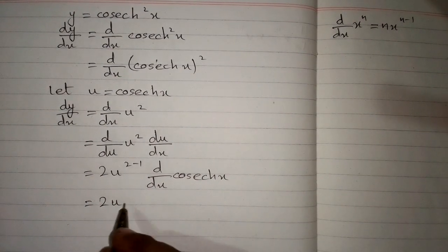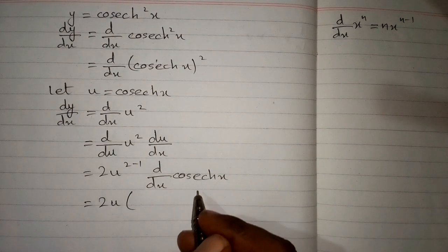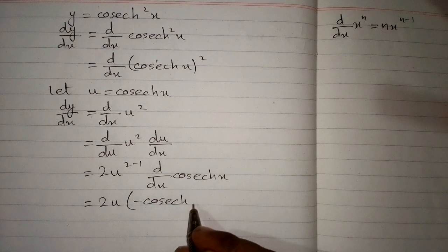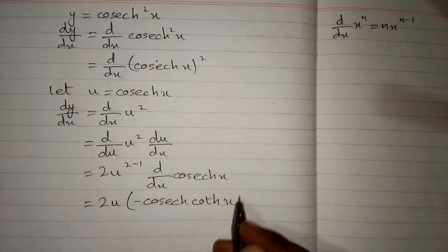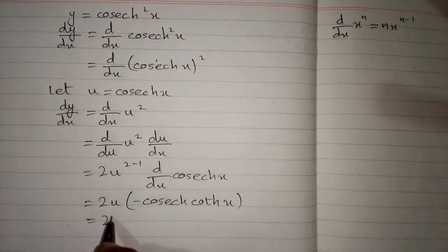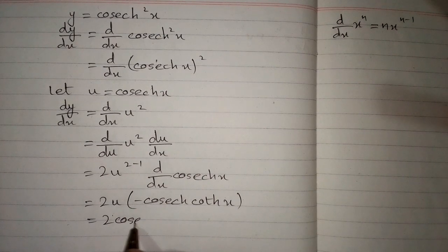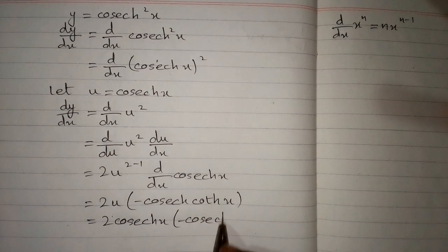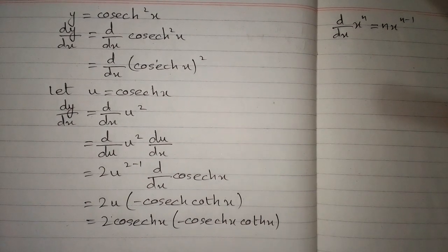Now we have 2u and the derivative of hyperbolic cosec x is minus hyperbolic cosec x hyperbolic cot x. Now we put the value of u which is hyperbolic cosec x multiplied by minus hyperbolic cosec x hyperbolic cot x.